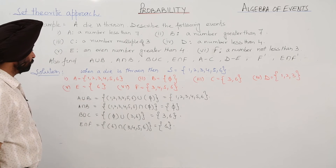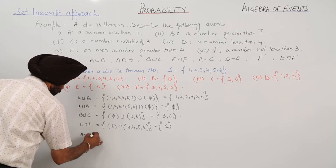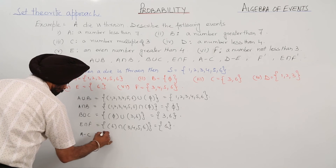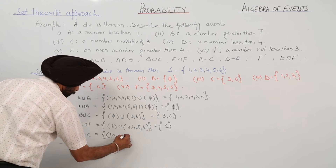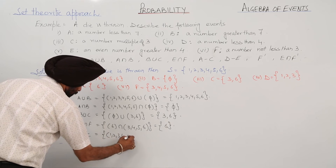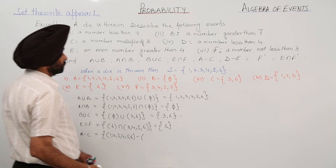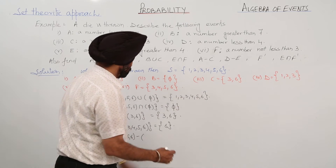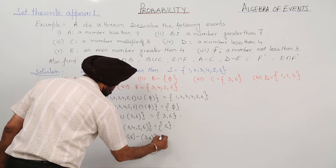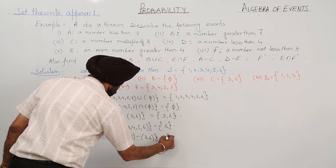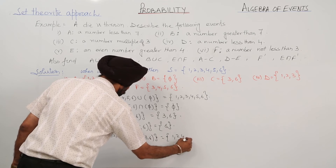Then the difference of A and C. A is {1, 2, 3, 4, 5, 6} and C is {3, 6}. So A minus C — removing elements of C from A — the answer will be {1, 2, 4, 5}.